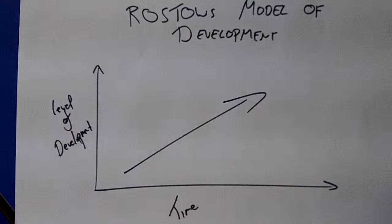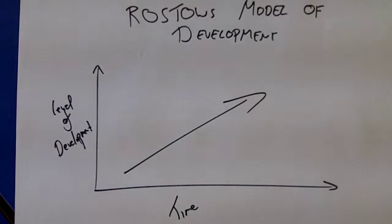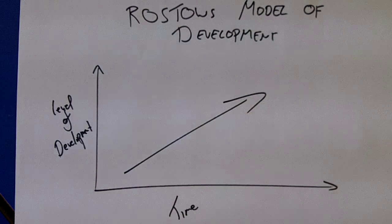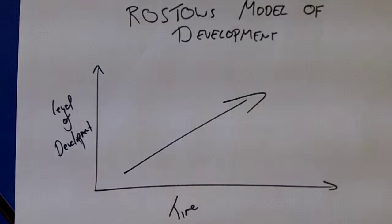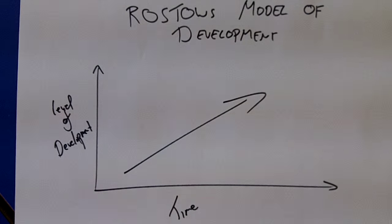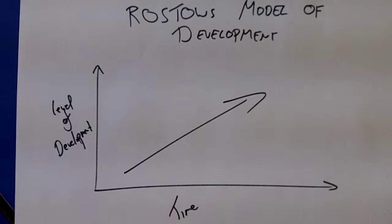Welcome to our first podcast on the development unit at Photography. What we're looking at today is Rostow's model for development. In the development unit, you're going to get a whole series of conceptual models that attempt to take what is an incredibly complex topic and simplify it down into a basic model. You should know the model, understand how different countries apply to it, and be able to critique it as well.